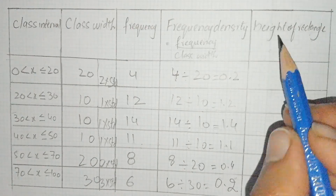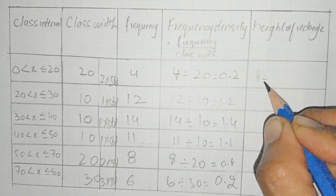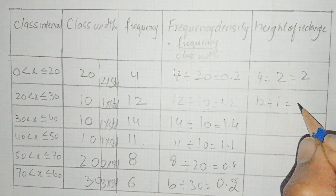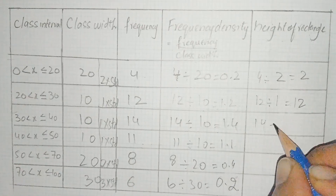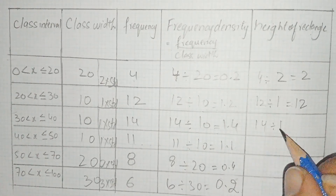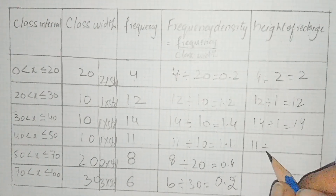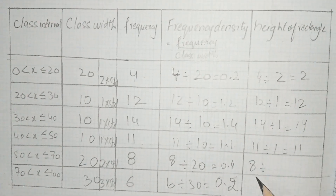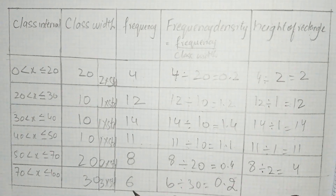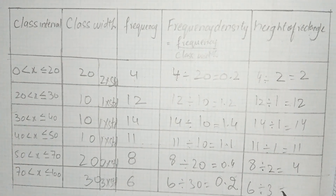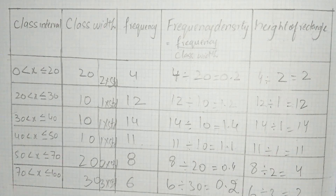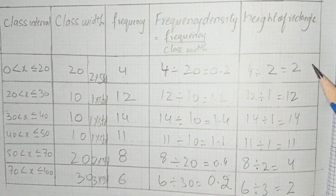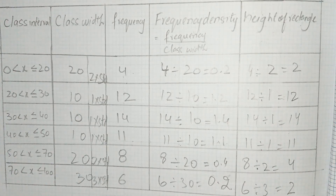Height of the rectangle: frequency 4 divided by 2 (standard multiplier) gives 2; frequency 12 divided by 1 gives 12; frequency 14 divided by 1 gives 14; frequency 11 divided by 1 gives 11; frequency 8 divided by 2 gives 4; and frequency 6 divided by 3 gives 2. These are the heights of the rectangles. Now we draw the histogram.